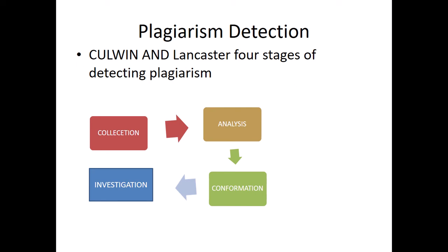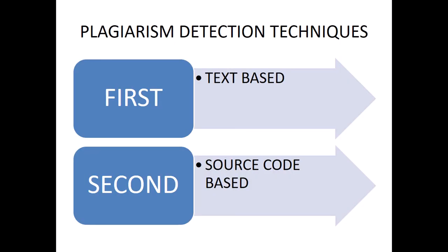In any case where a source is involved, there is a chance of plagiarism. There are four stages of detection from Colvin and Langster: first, collection; second, analysis; third, confirmation; and fourth, investigation. Detection is important because even after taking all precautions, there may still be plagiarism, so we move to the detection stage.